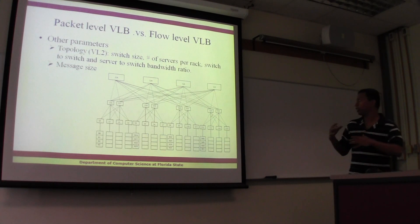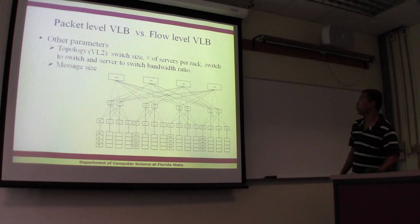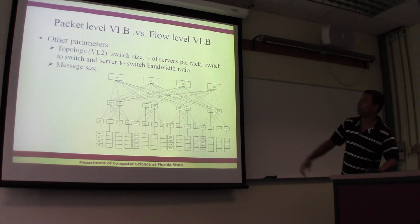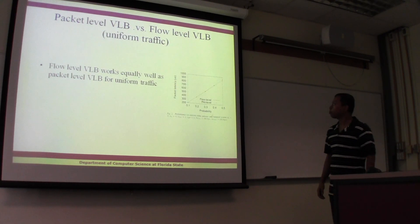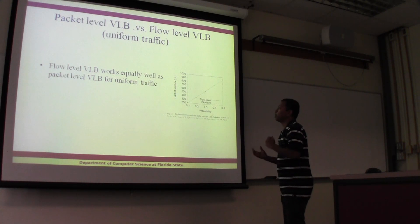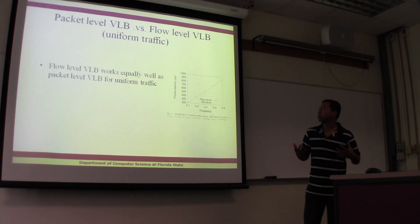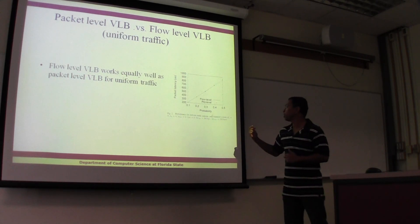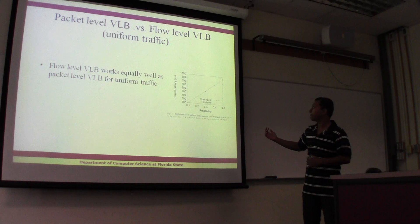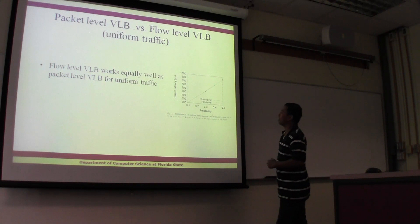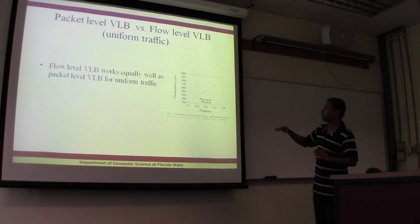We vary those ratios and try to find which performs better. We also vary the message size. For uniform traffic, where we have equal probability of any two nodes communicating, we find that flow-level VLB and packet-level VLB perform almost similarly — the curves are very close and the performance is very similar.